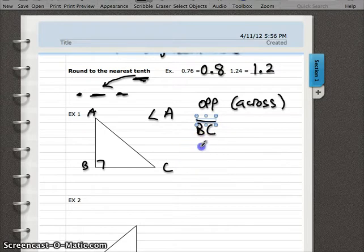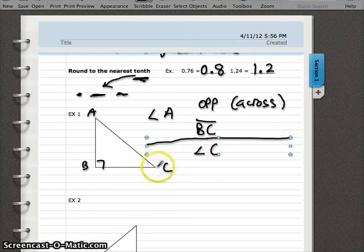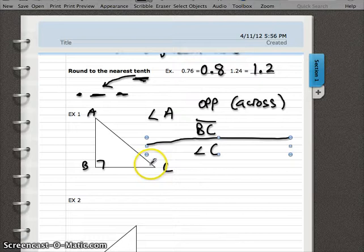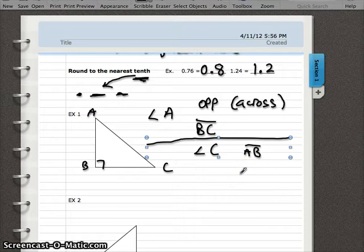Well, now let's ask ourselves what is opposite or across from angle C. So now we're standing at a different spot. We're standing at angle C and we're asked what's the opposite side of angle C. So we look across and we find segment AB. So AB is opposite angle C. So hopefully you can find the opposite side of an angle.